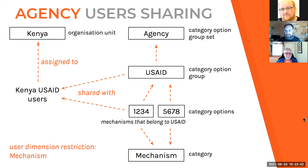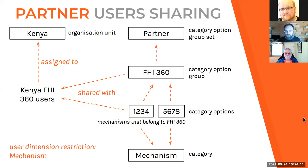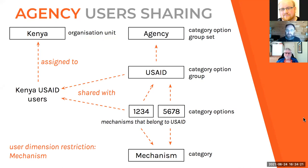Agency users are set up similarly: mechanisms belonging to USAID form a category option group, placed in an agency category option group set, and shared with 'Kenya USAID users.' Each user appears in only one user group, indicating whether they're a partner user, an agency user, or another user type.